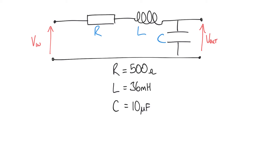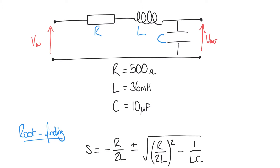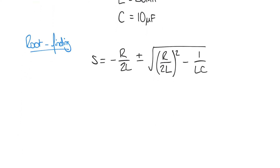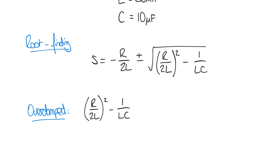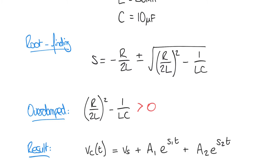To recap, we're going to use the root-finding method to derive which case we're in, and we're expecting an over-damped case. Using the discriminant of the characteristic equation — specifically the term (R/2L)² − 1/LC — we said that if the circuit is over-damped, the value of that discriminant will be greater than zero. If that's the case, the result must take a particular form: VC(t) is the voltage across the capacitor, the output response.